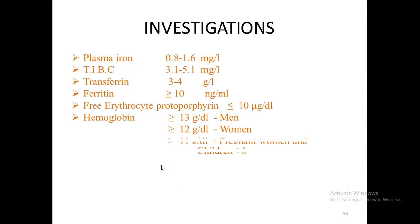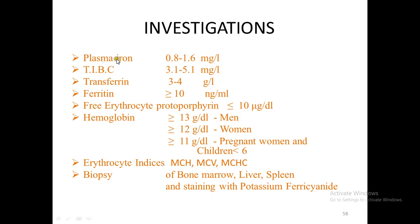How do we investigate a patient for iron deficiency? Normal values: plasma iron is 0.8 to 1.6 milligrams per liter; TIBC is 3 to 5 milligrams per liter; transferrin is 3 to 4 grams per liter; ferritin is more than or equal to 10 nanograms per ml; free erythrocyte protoporphyrin is less than or equal to 10 micrograms per dl. Hemoglobin in men: more than or equal to 13 grams per dl; in women: more than or equal to 12 grams per dl; in pregnant women and children less than six years old: more than or equal to 11 grams per dl. Erythrocyte indices — mean corpuscular hemoglobin, mean corpuscular volume, mean corpuscular hemoglobin concentration — and bone marrow biopsy stained with potassium ferricyanide can also be performed.